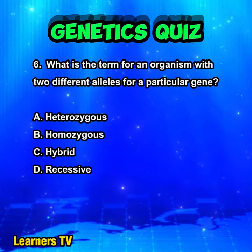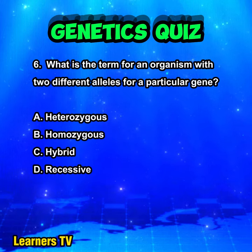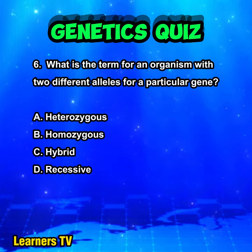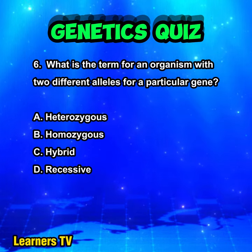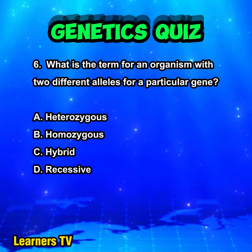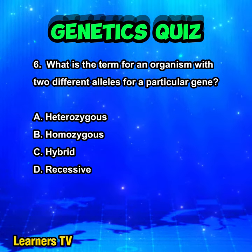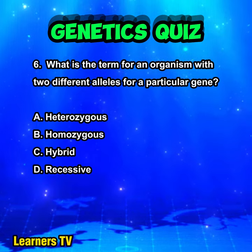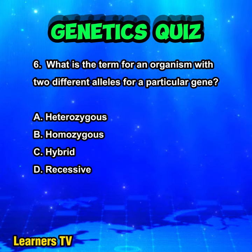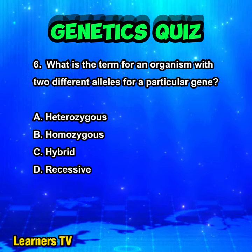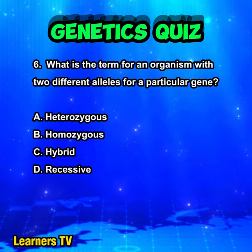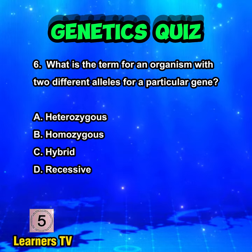What is the term for an organism with two different alleles for a particular gene? A. Heterozygous. B. Homozygous. C. Hybrid. D. Recessive.